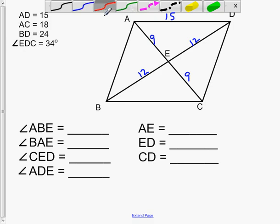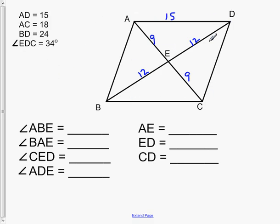And then let's label the angles. I'll do the angle in red. EDC. That would be EDC. This is 34 degrees.